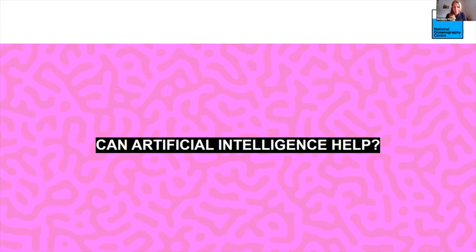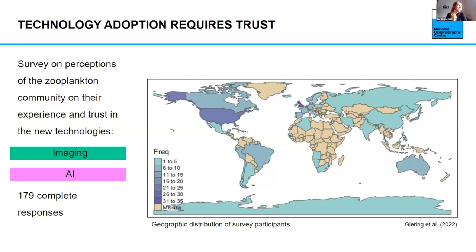So the big question now is: can artificial intelligence help further than just pre-sorting? Whenever we have a new technology, we need people to trust it. We were very interested in the current state of trust among plankton researchers, so we carried out a survey at the end of 2021 and beginning of 2022, asking the zooplankton community about their experience and trust in two aspects of this technology: imaging and the AI aspect.